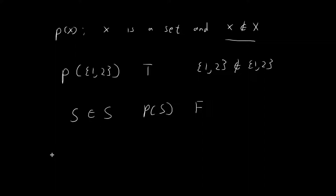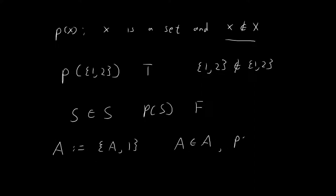Another example: we can define a set A to be the set consisting of the members A and the number 1. For this case, A is an element of itself, and so p of A is going to be false because it violates this condition. These are just some examples to illustrate what p of x does.